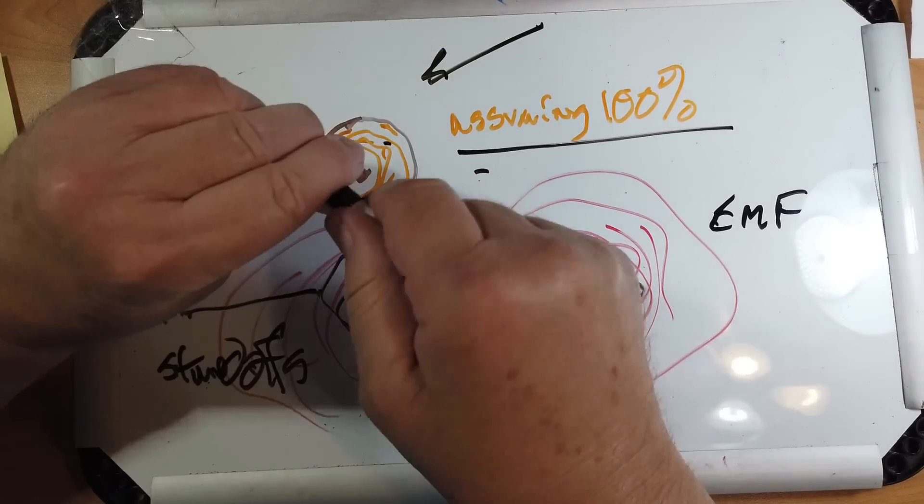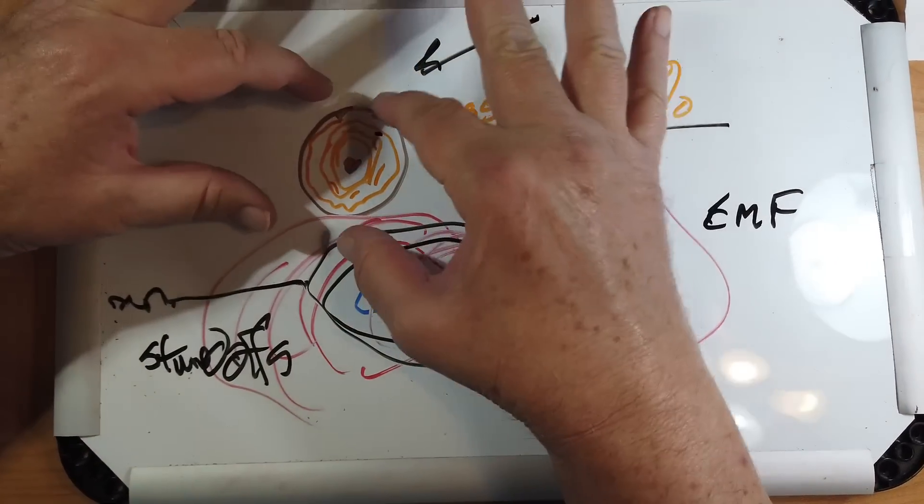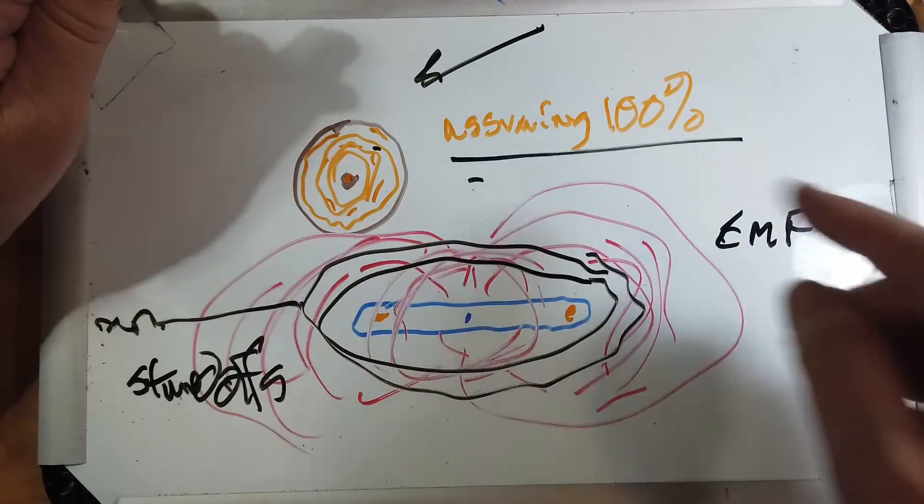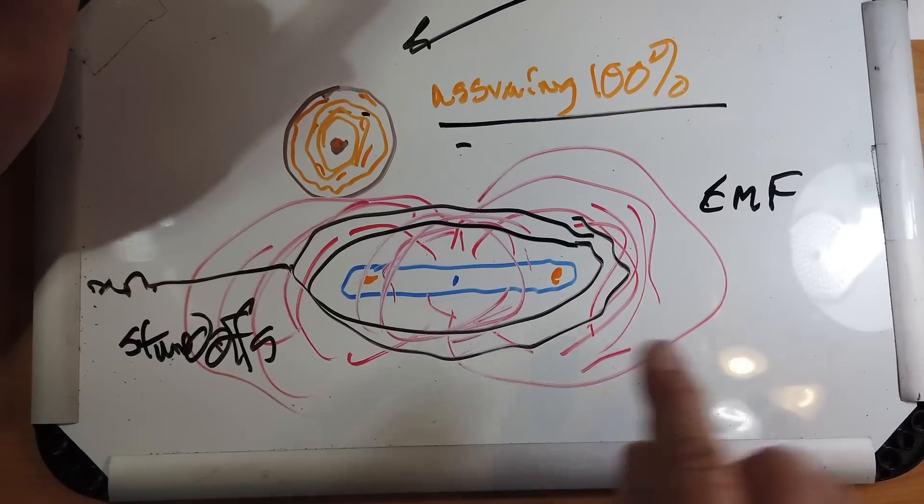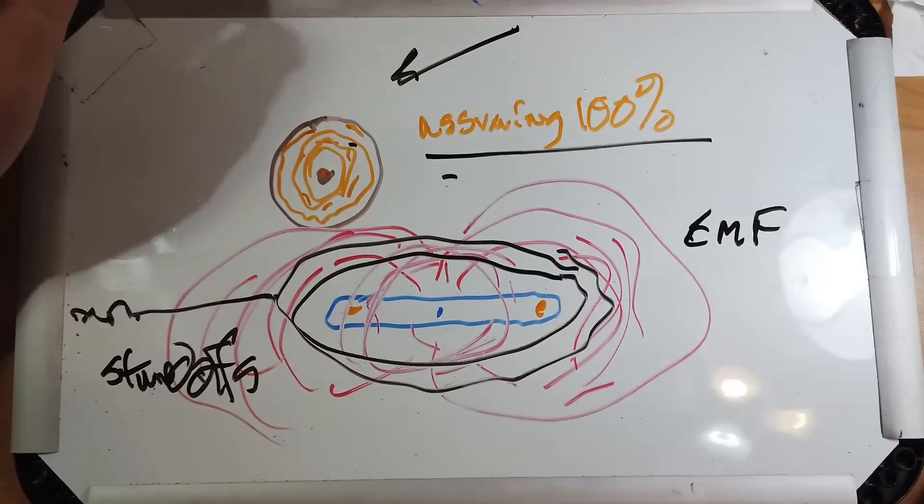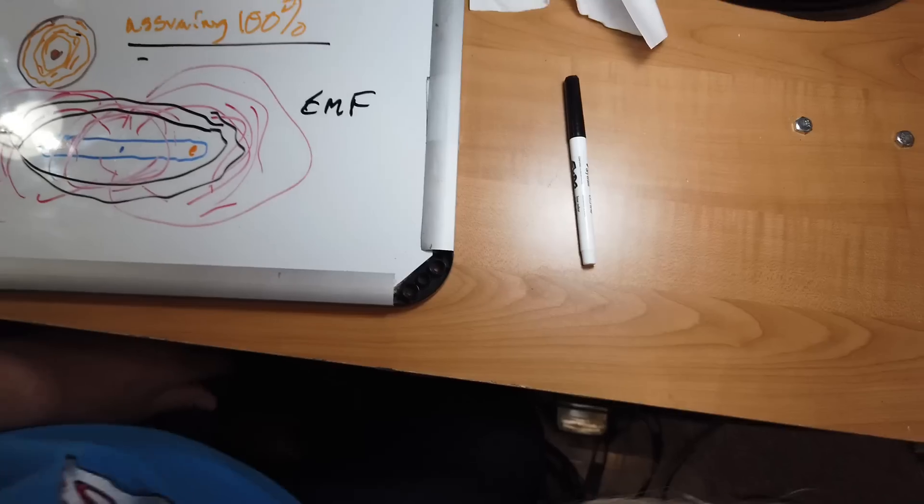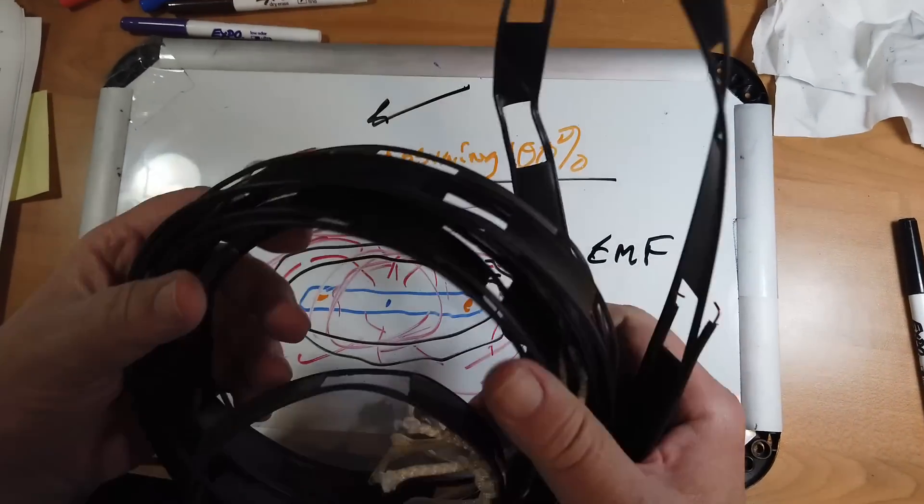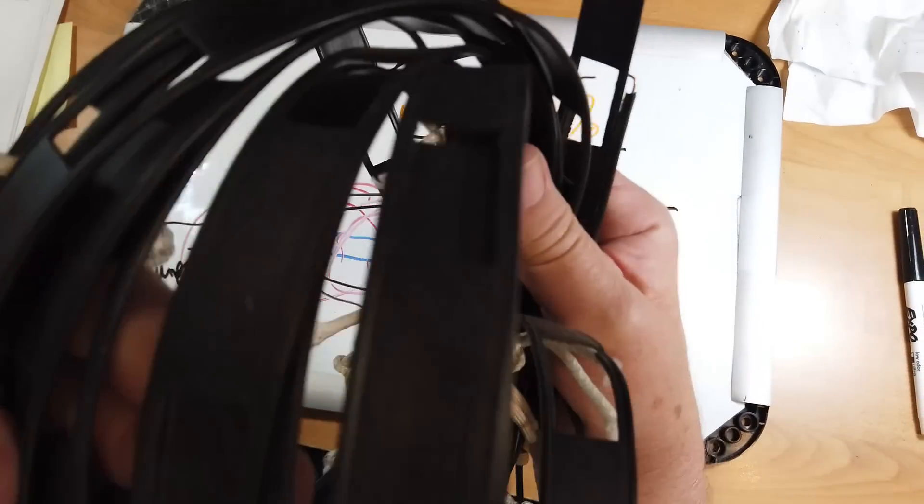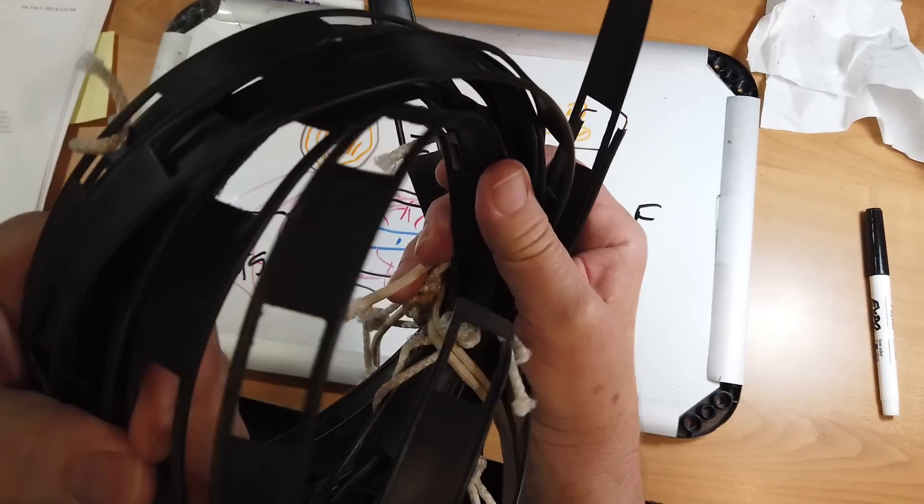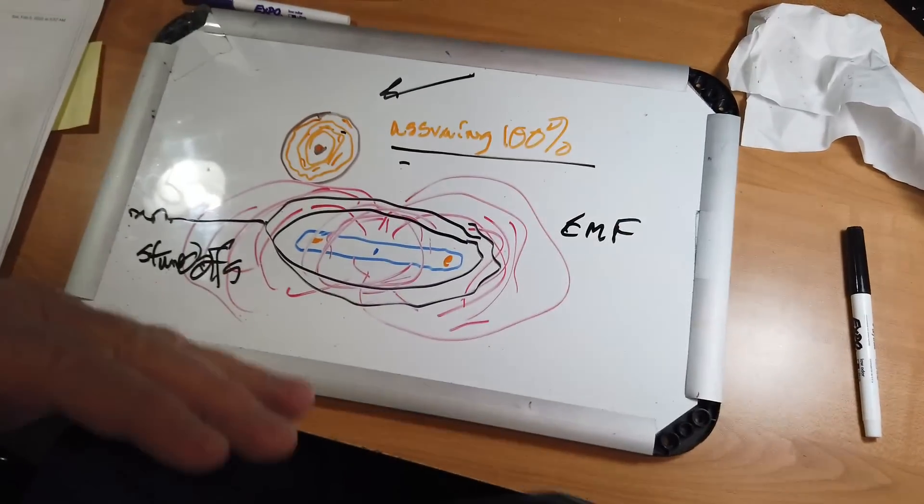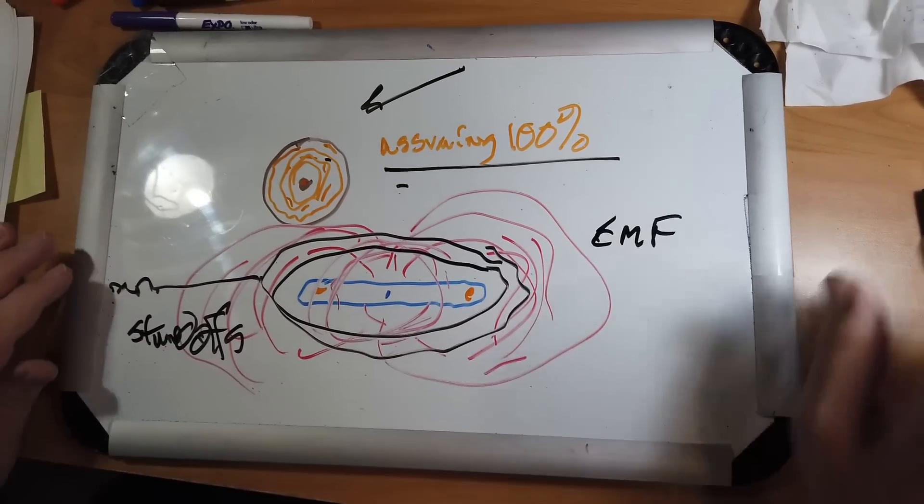One thing you can do with coax, because the electromagnetic field is entirely within the coax, you can coil it up. If you've got extra coax, just coil it up. But with this kind of thing, if you coil it up, you'll get the different layers interfering with each other. This right here is just a coil of window line, which is often mistakenly called ladder line. You need to lay it out in kind of a random pattern on the ground.